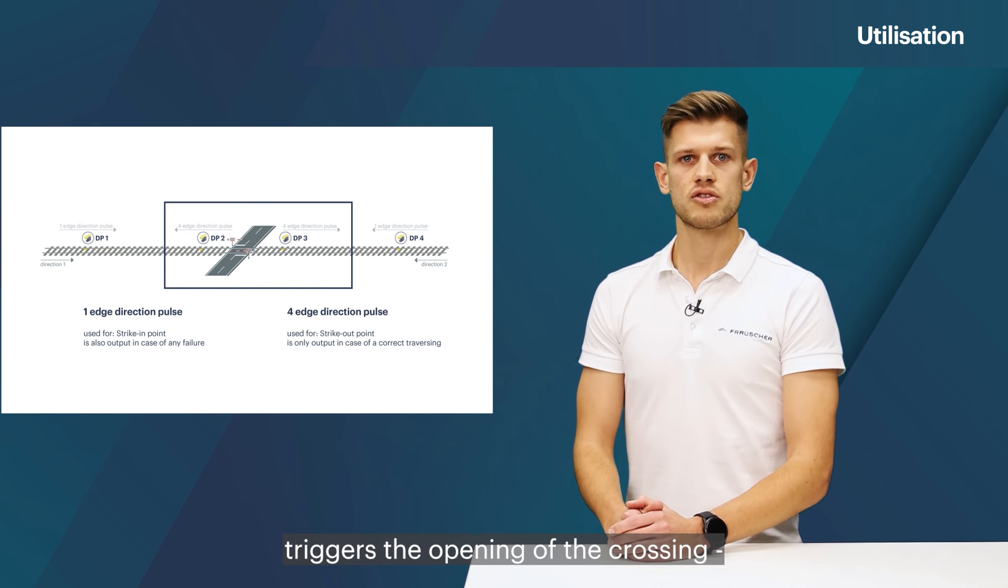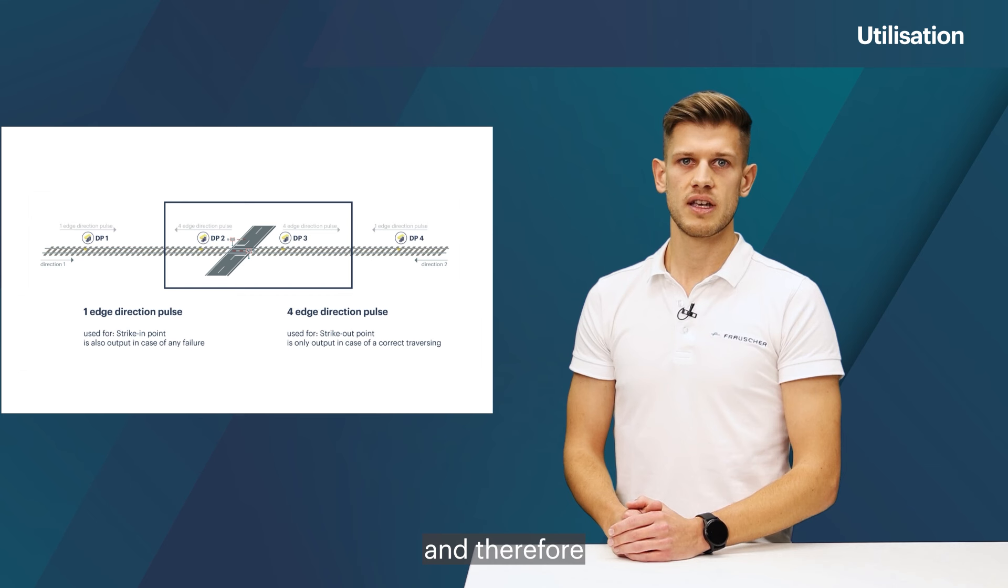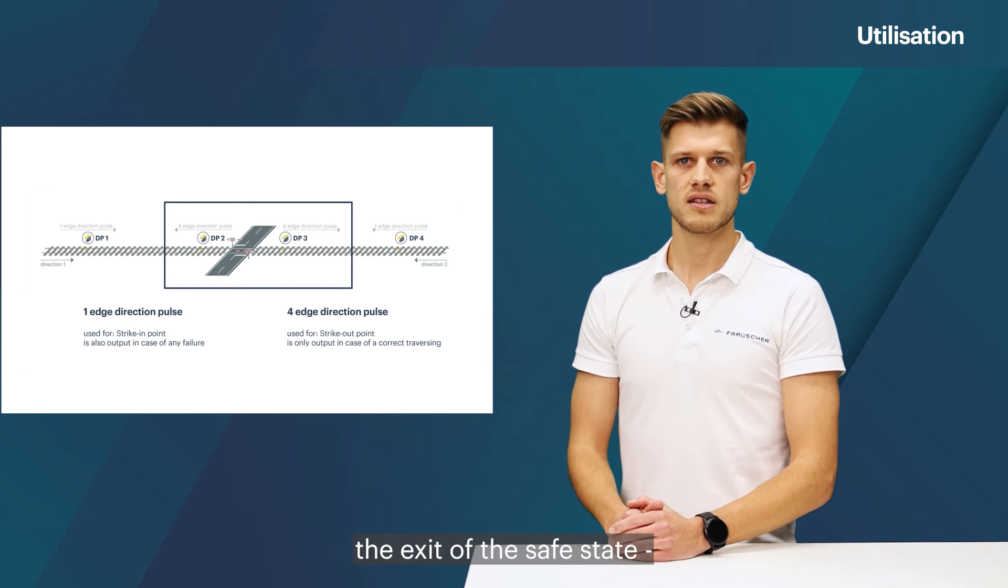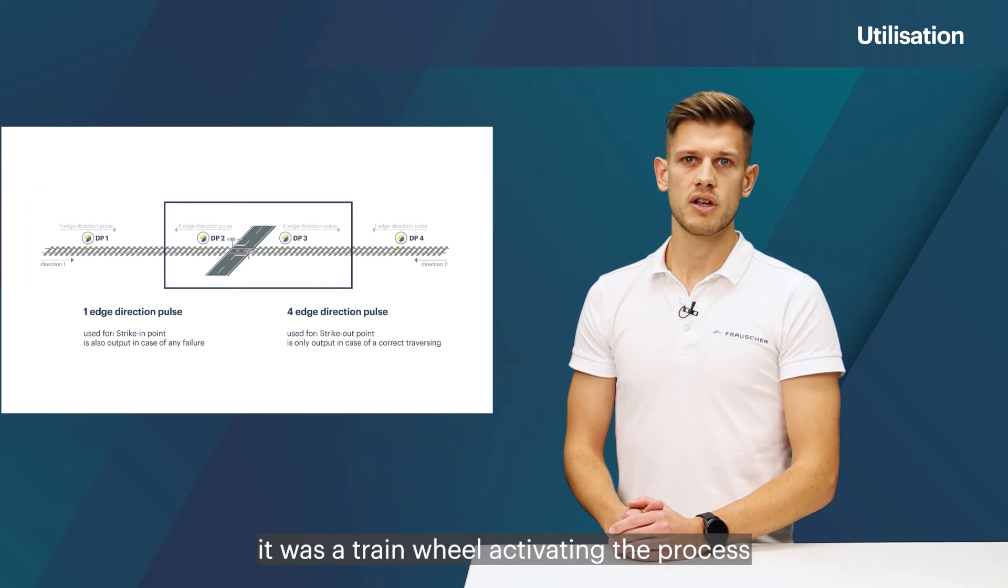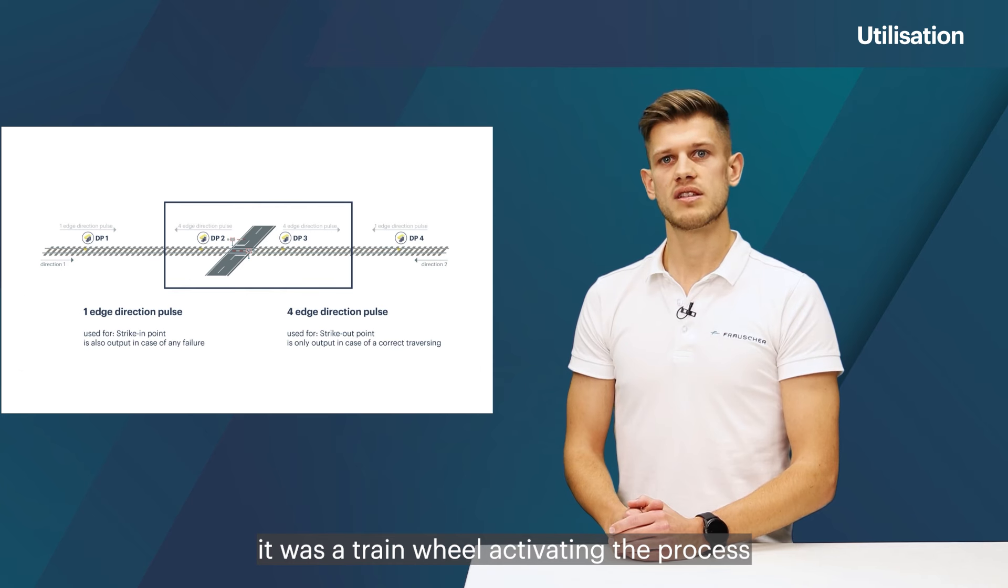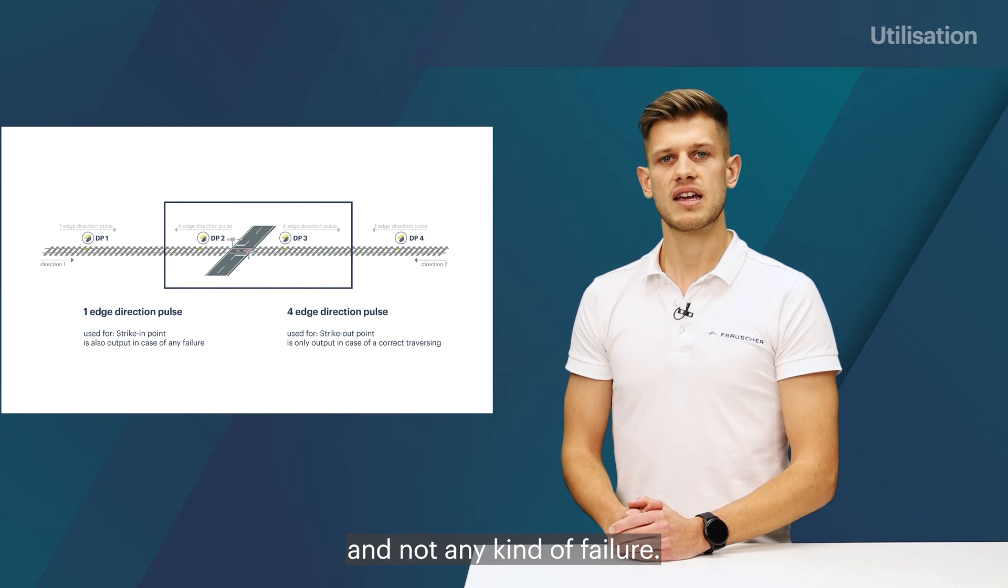As this command triggers the opening of the crossing and therefore the exit of the safe state, we have to make sure it was a train wheel activating the process and not any kind of failure.